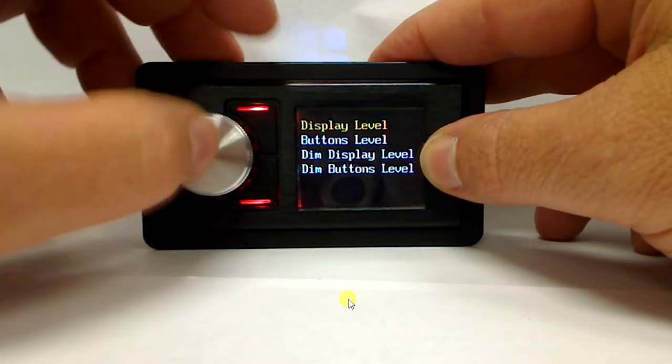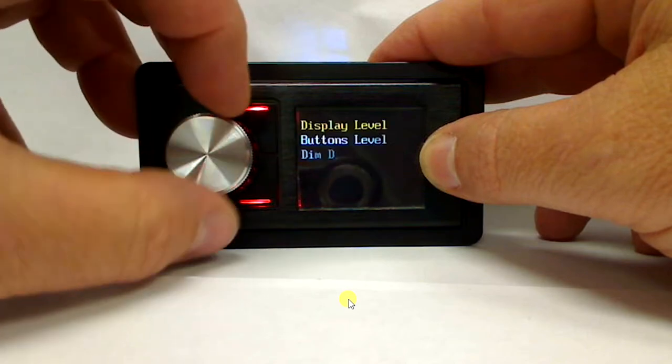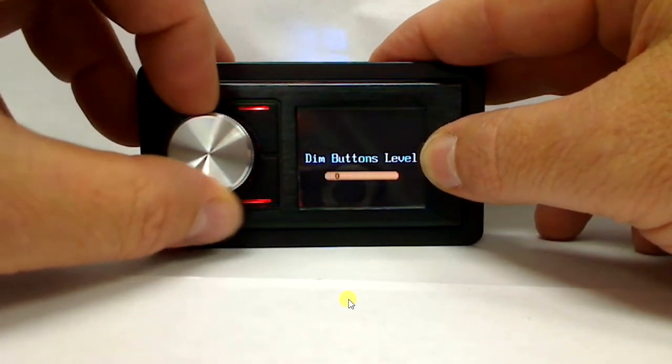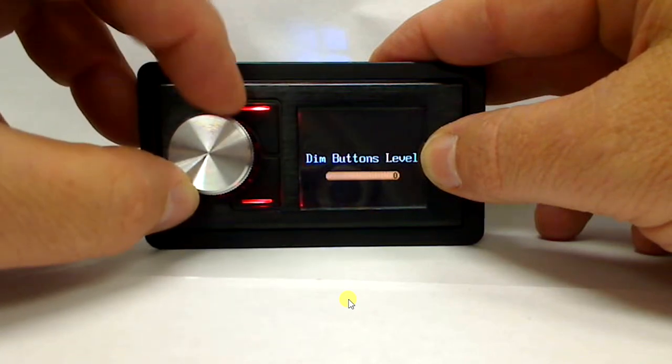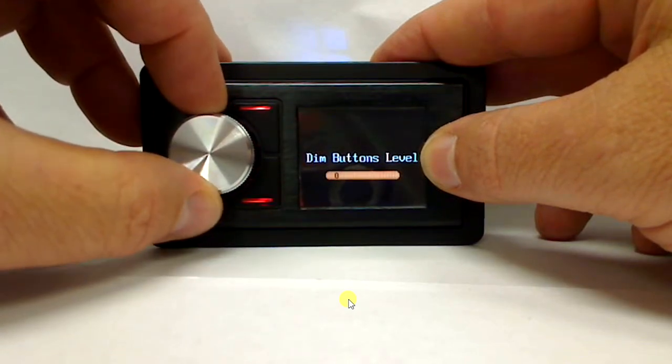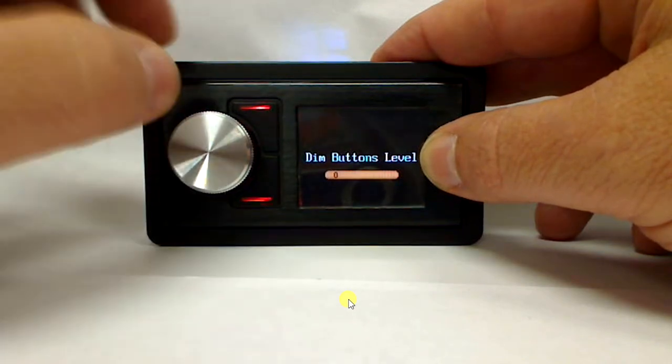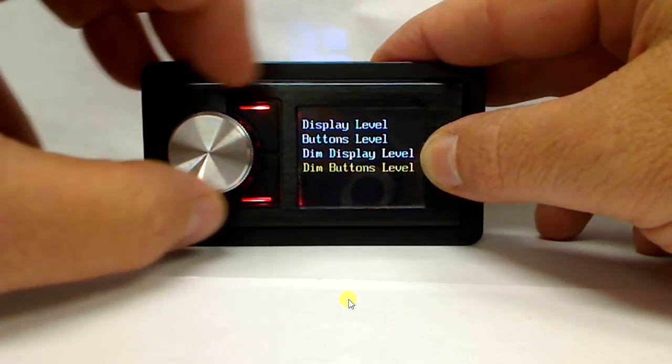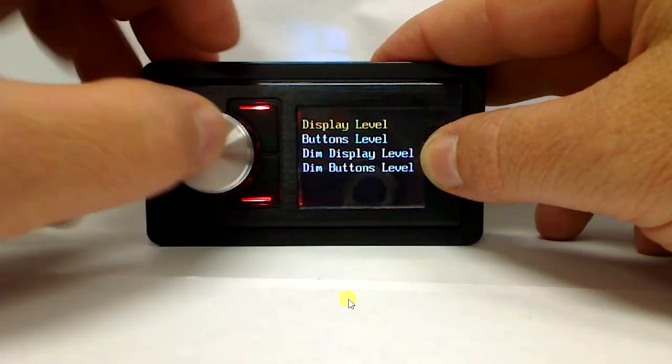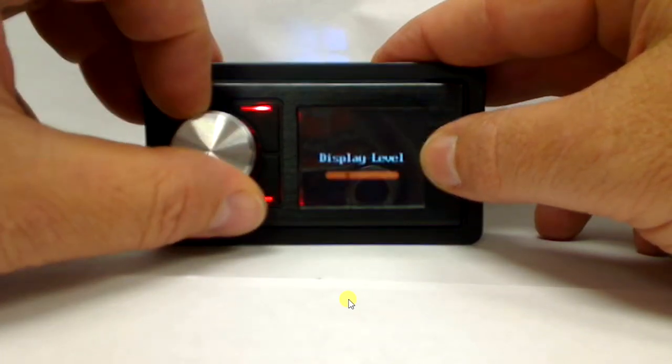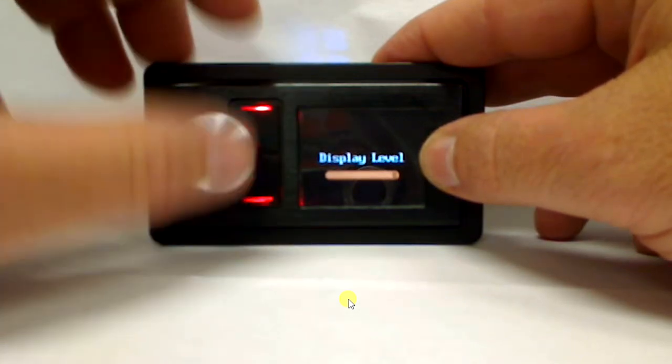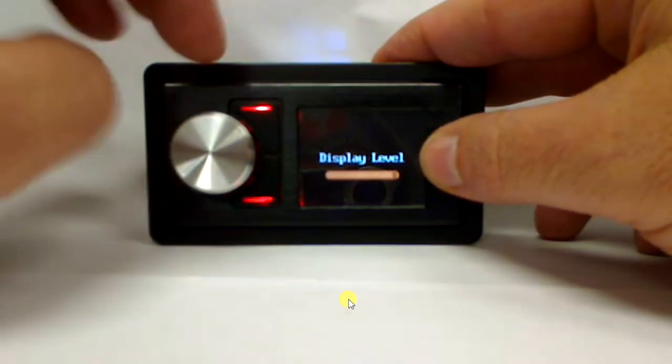Now we're going to back out of this, come down to dim buttons level. So now when the illumination is on, we can turn those down from bright down to the lower settings so we're not getting blinded at night. So that's something you can define individually for your specific application, and of course the same thing for the display as well. You can adjust the intensity level of the brightness of the display both with the illumination trigger and without.